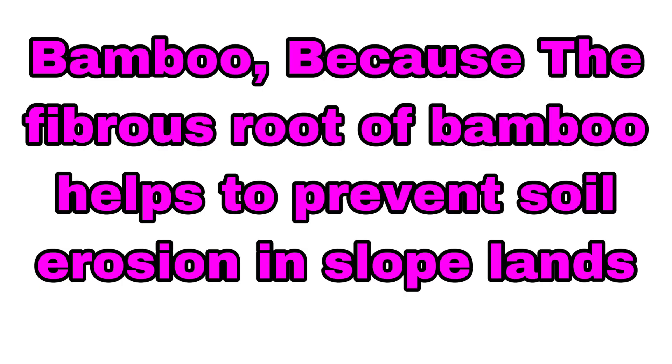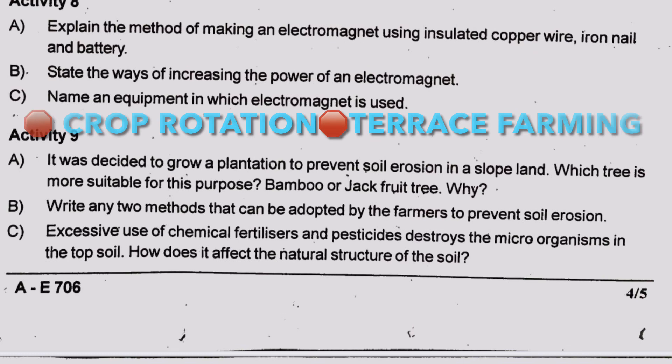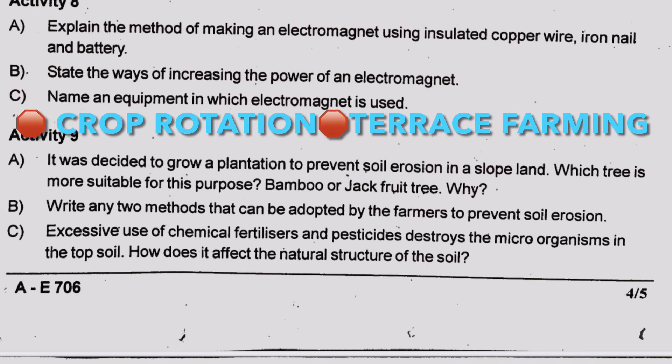Bamboo is more suitable because the fibrous roots of bamboo help to prevent soil erosion in the sloped area. Two methods that can be adopted by farmers to prevent soil erosion are crop rotation and terrace farming.